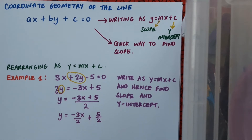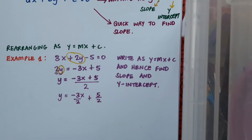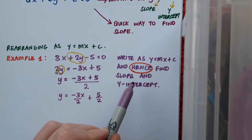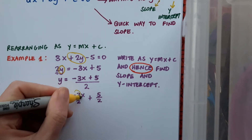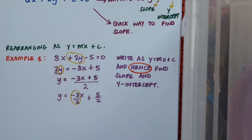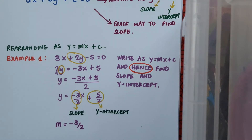Going back to the question: write this line in the form y equals mx plus c and hence find the slope and the y-intercept. 'Hence' means use what you just did to answer the next part. Using the rearranged form, the slope is just the coefficient of x, so m equals minus 3 over 2. And the constant at the end, plus 5 over 2, is the y-intercept, so the y-intercept is 5 over 2.